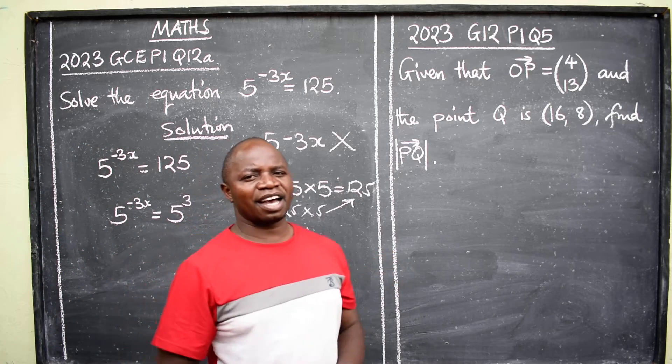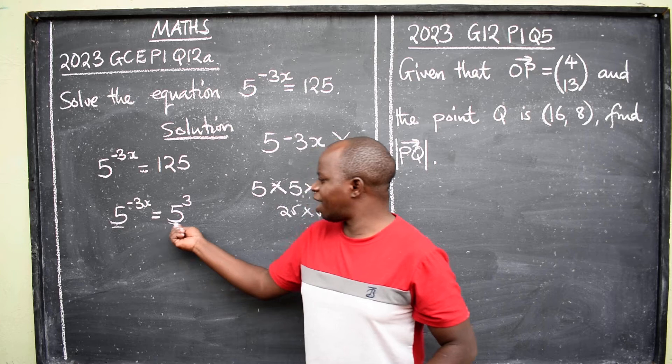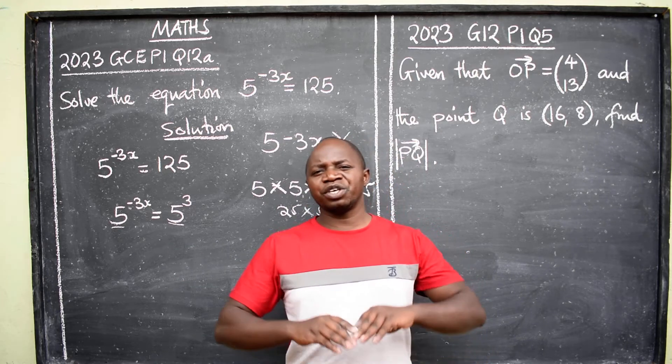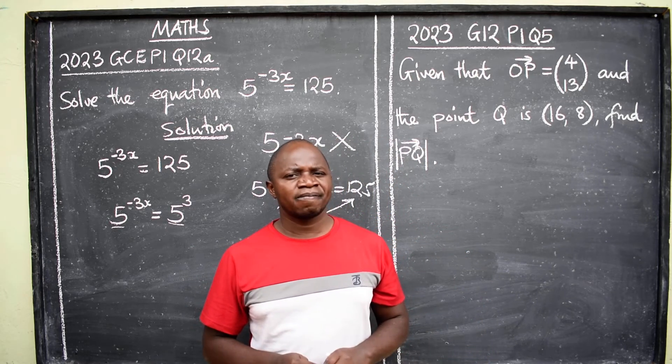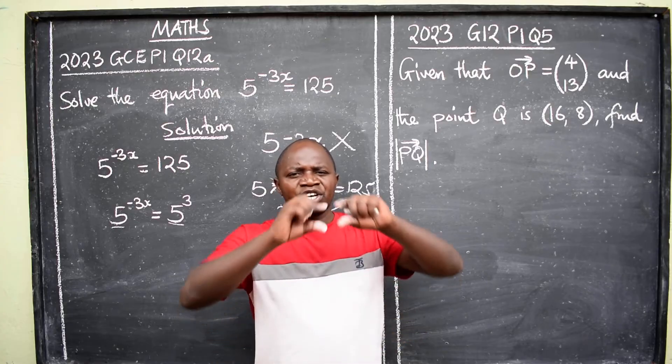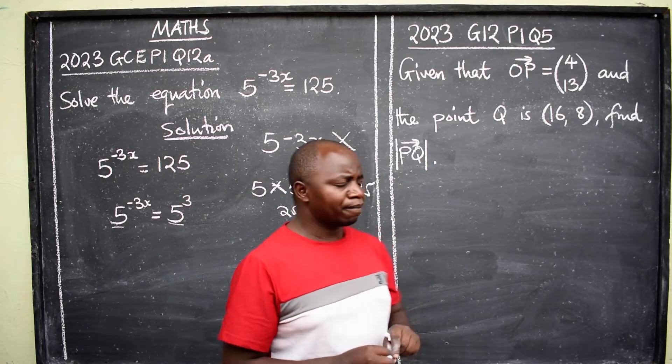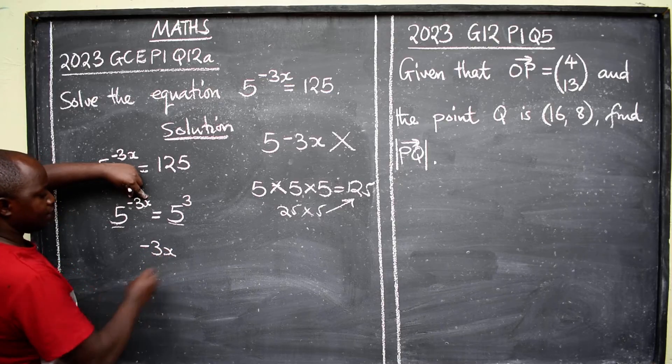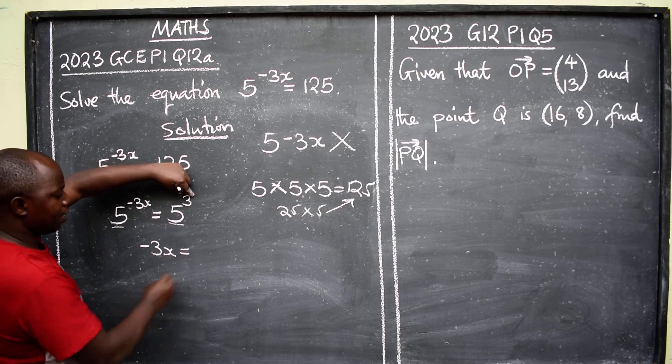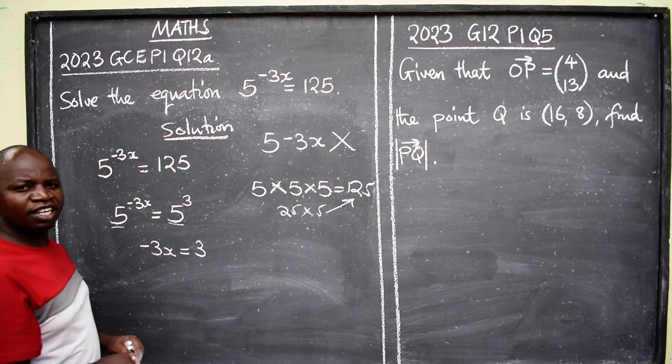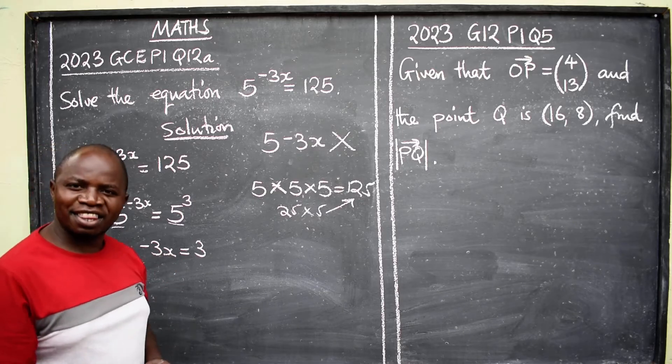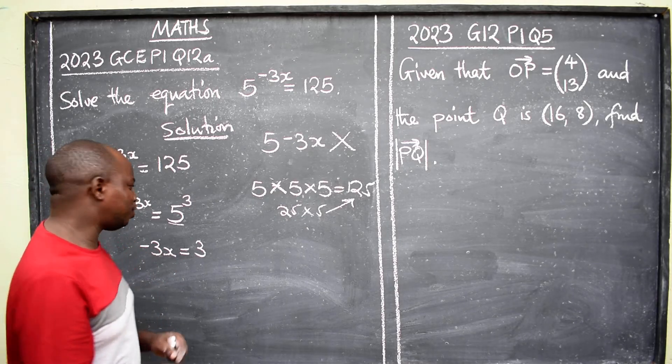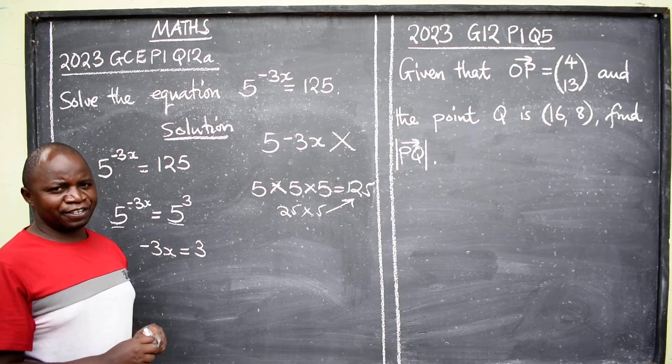Next step, bases are the same, 5 and 5. You are now going to ignore the bases, equate the powers. So the power here is negative 3x is equal to the power here is 3. Now it is linear at this point, it means we are going to find one value of x.